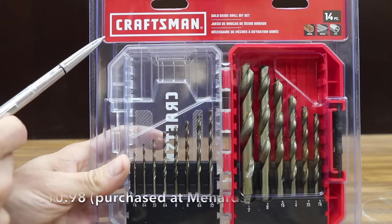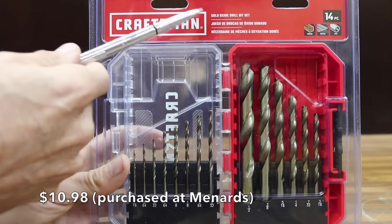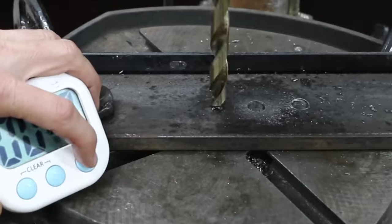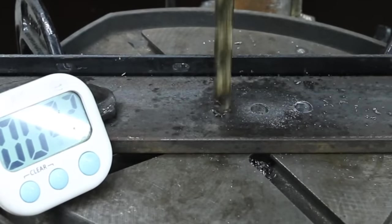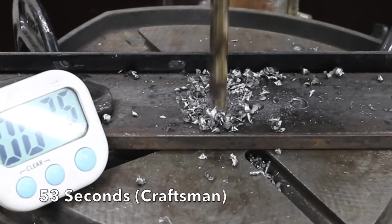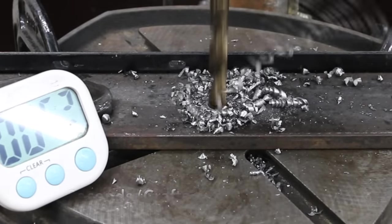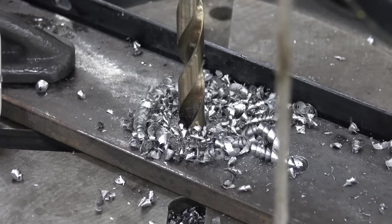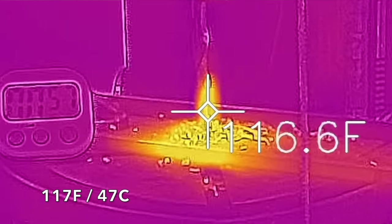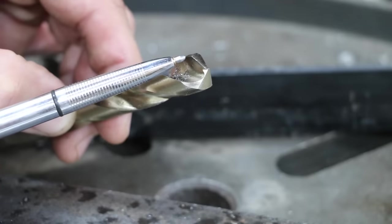At only $10.98 is this Craftsman brand Gold Oxide drill bit set for 14 pieces. Very impressive job by Craftsman compared to Black & Decker cutting through this steel at about twice the speed. The drill bit's a lot cooler at only 117 degrees Fahrenheit. There's no visible damage or wear to this drill.